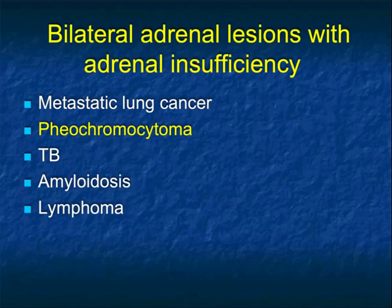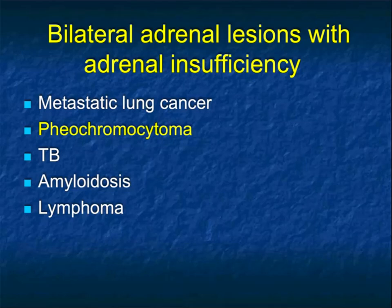When looking at functionality, we think of pheos as causing hypertension. But patients with bilateral adrenal lesions can have adrenal insufficiency, and that's true with pheochromocytomas. It's one of the five things - cancer, pheo, TB, amyloid, and lymphoma - that can cause adrenal insufficiency.